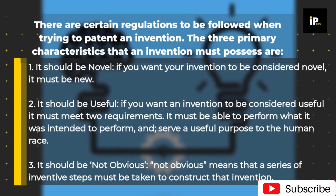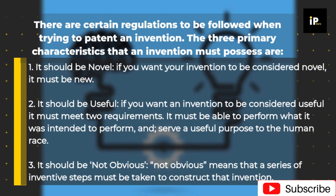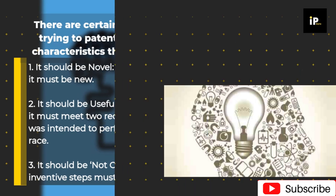Two, it should be useful — if you want an invention to be considered useful, it must meet two requirements: it must be able to perform what it was intended to perform, and serve a useful purpose to the human race. Three, it should be not obvious — not obvious means that a series of inventive steps must be taken to construct that invention.